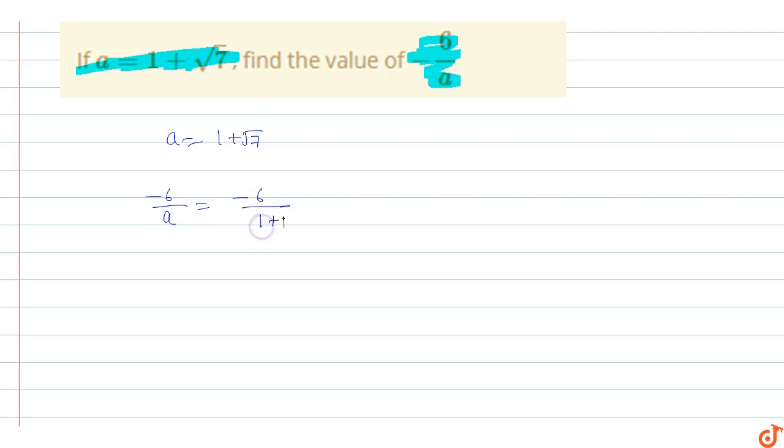So it's got rationalization. Again, I'm rationalizing 1 minus root 7, multiply and divide. So this is equal to minus 6 into 1 minus root 7 upon 1 plus root 7 into 1 minus root 7.